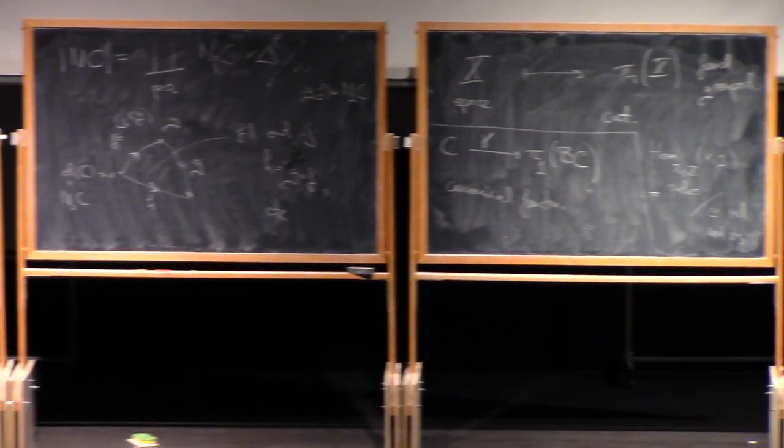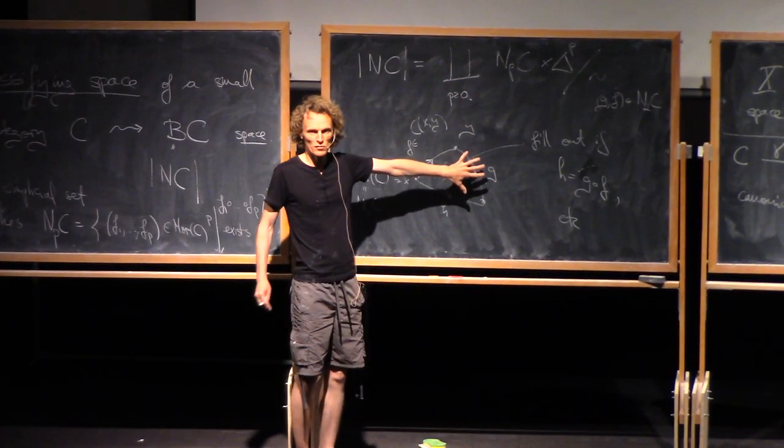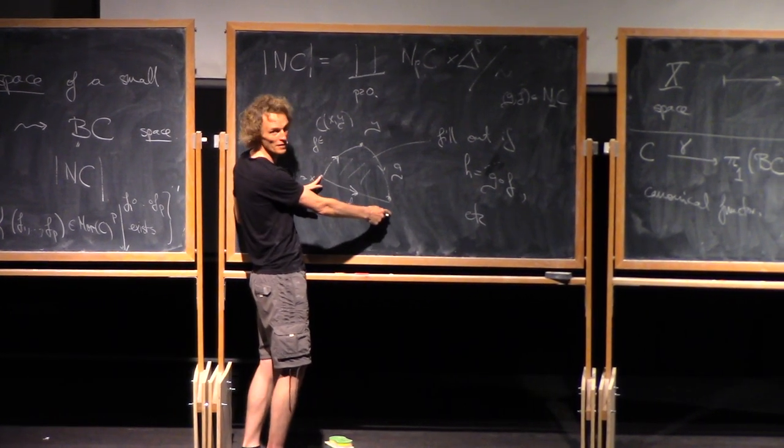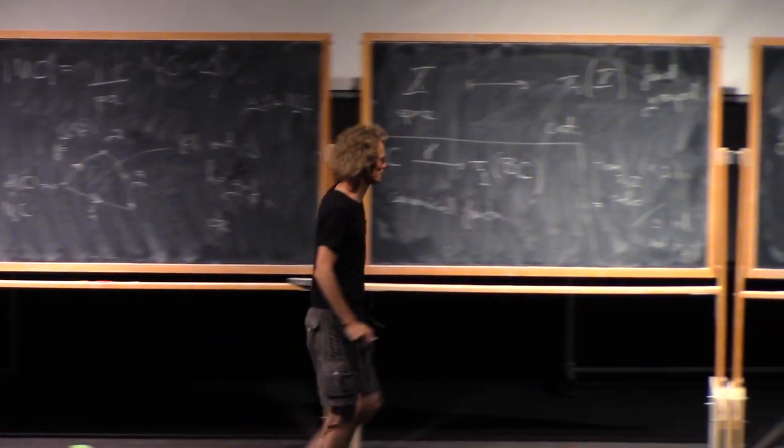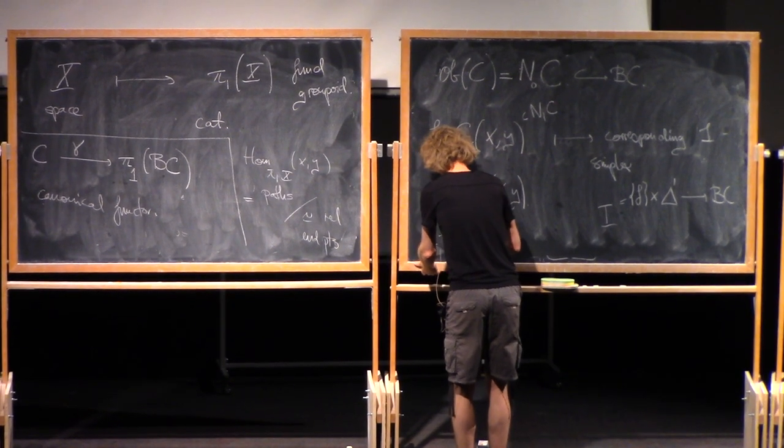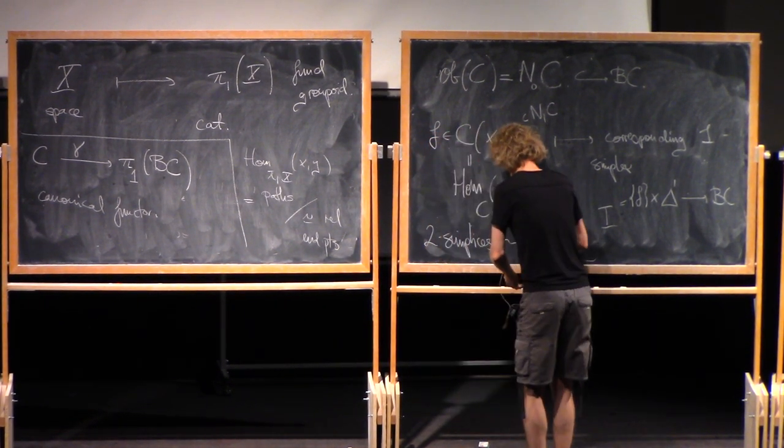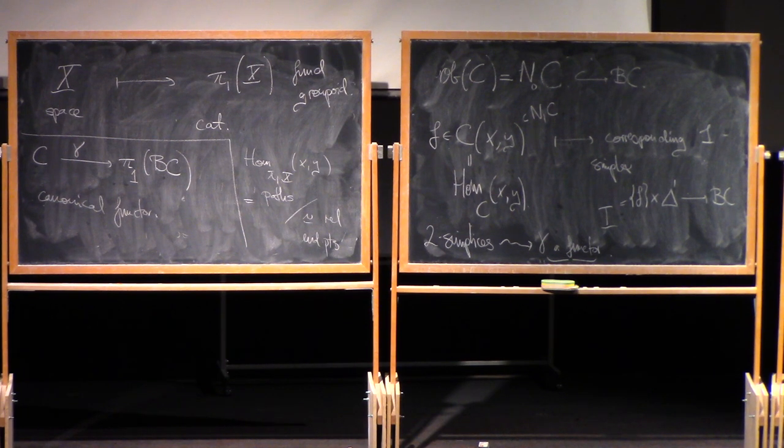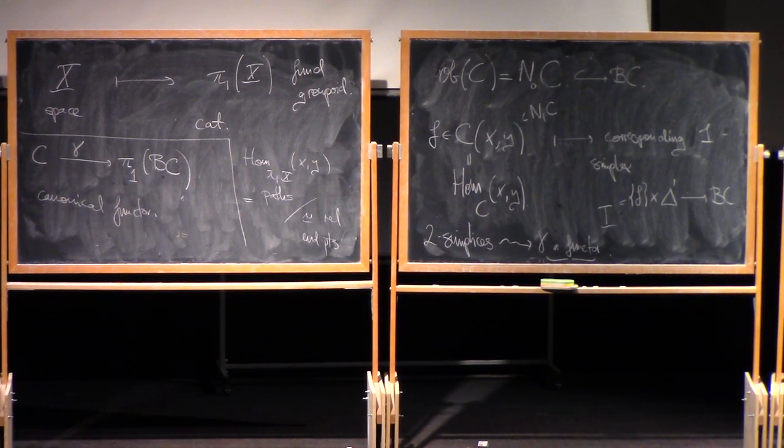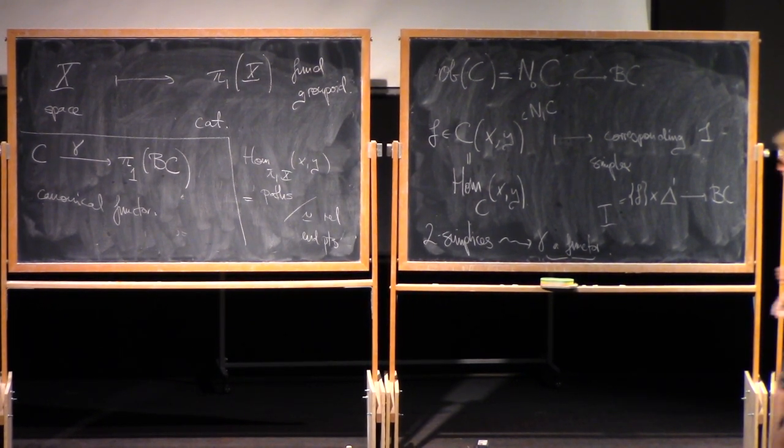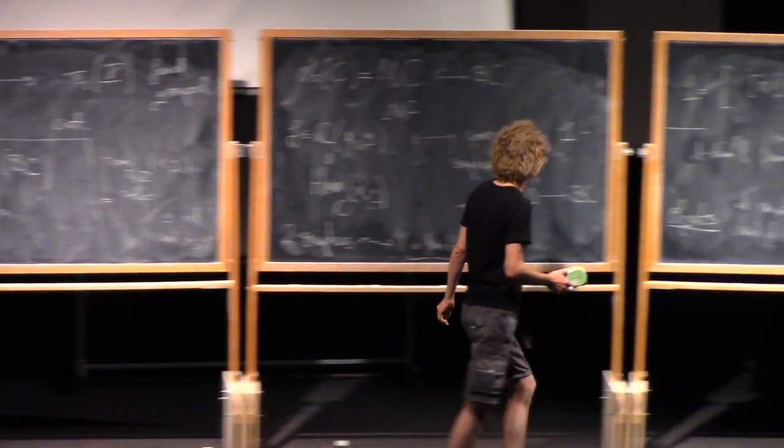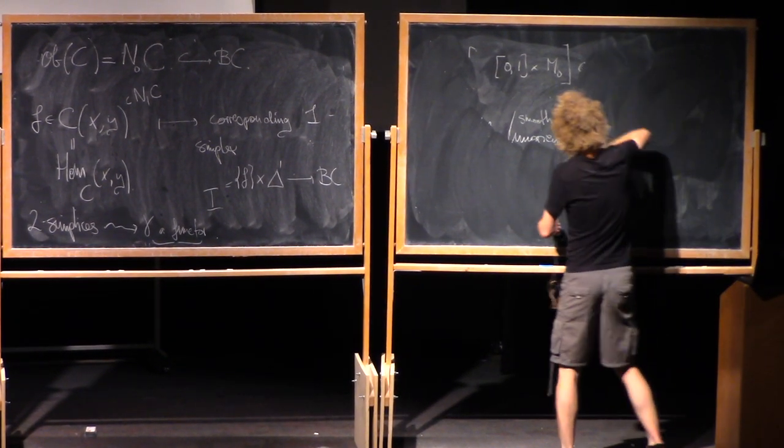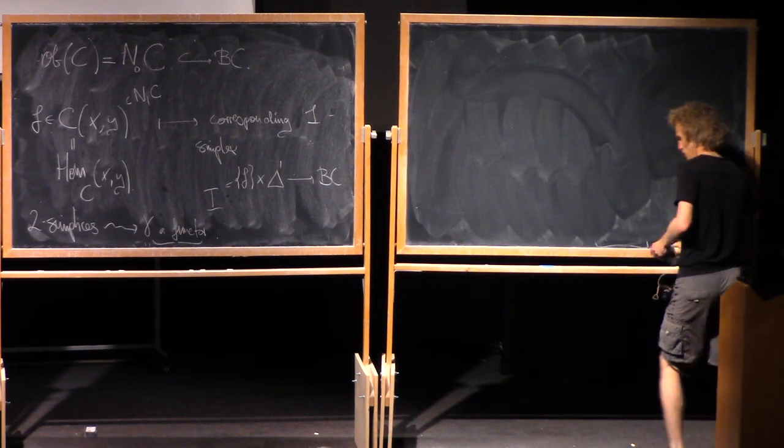Then to check that it's a functor, I have to check that it preserves composition. But that's what the two simplices do. If I compose these, I get that one. And this concatenation is homotopic to that one. So the two simplices is what makes γ a functor preserving composition.